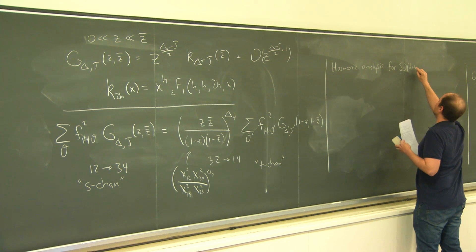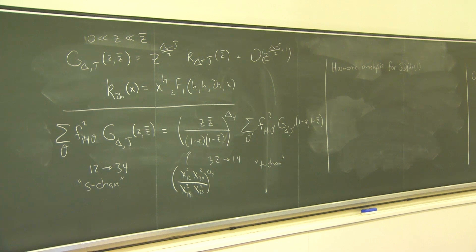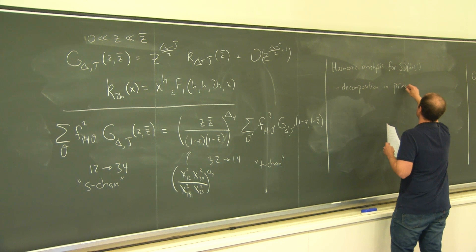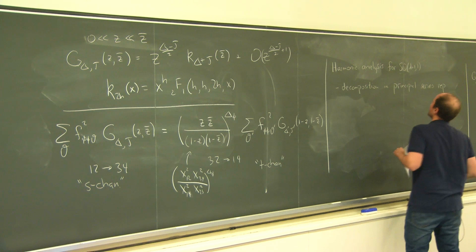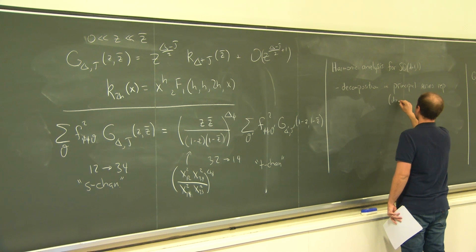Essentially what harmonic analysis for the Euclidean conformal group tells us is that whenever you have an object that transforms under the Euclidean conformal group, it can be decomposed into things that transform in a very special type of representation — known as the principal series representation. So we always have some kind of decomposition into principal series representations. There are other representations that can in principle appear — the so-called discrete series — but those will not play a role in what we're doing, and I'll explain why in a little bit.